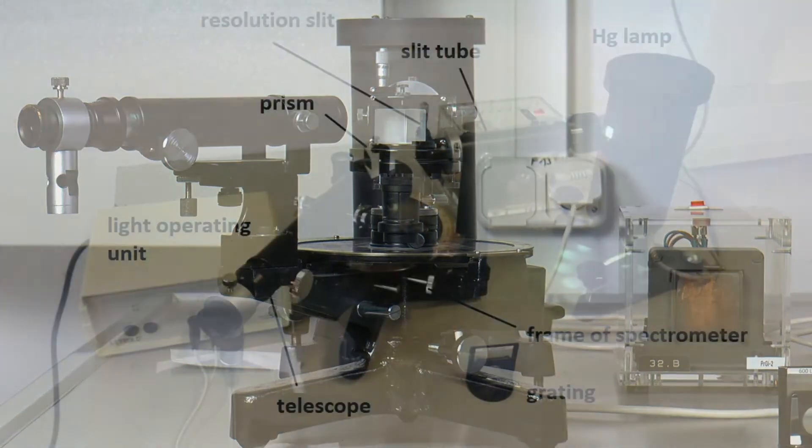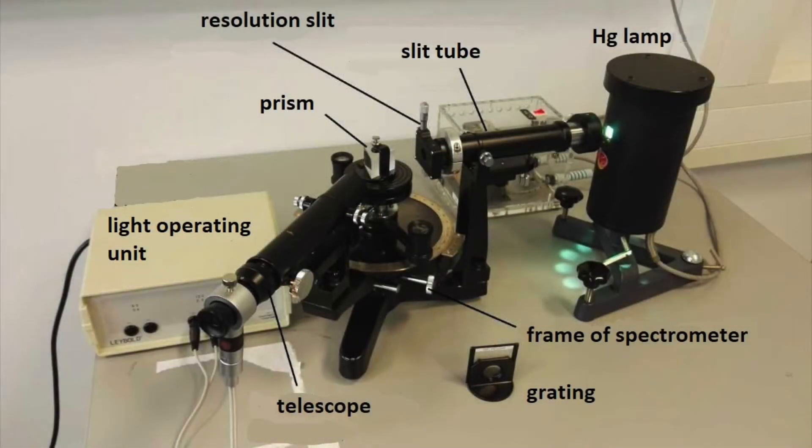The experimental setup comprises the frame of the spectrometer with the angular scale, the telescope with the operating unit for the lighting, a slit tube with the attached second resolution slit, the mercury lamp with its operating unit, the prism and the grating.